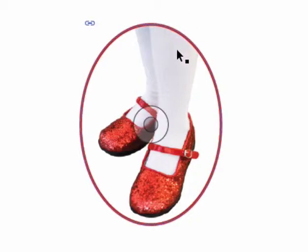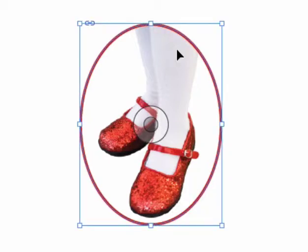If I come over a graphic with an image inside and click, I've selected both the frame and the image. Come over to a corner, press the command or control key, and then also press the shift key to keep the frame and image proportional.